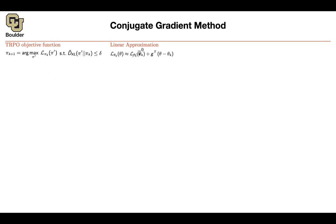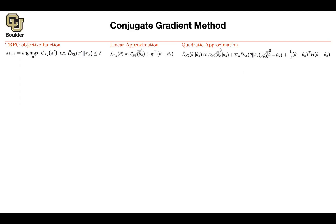The zeroth-order term drops because the advantage of a policy over itself is zero. Then you do a quadratic approximation to the KL divergence constraint using Taylor series expansion. The first term — KL divergence of a distribution with itself — is zero. The first derivative of KL divergence evaluated at theta-k also turns out to be zero, which I'll leave as an exercise. So those two terms vanish, and what remains is the Hessian term. So overall: linear approximation to the objective, quadratic approximation to the constraint.